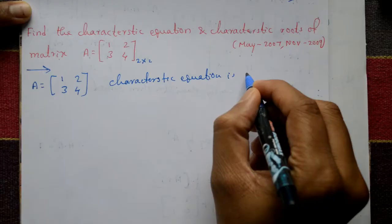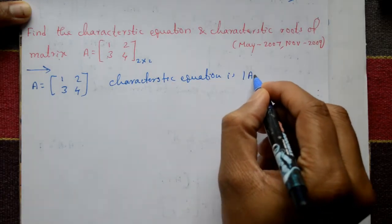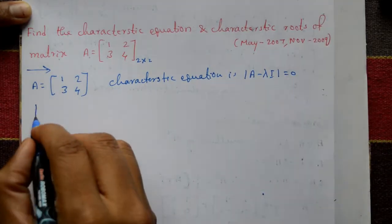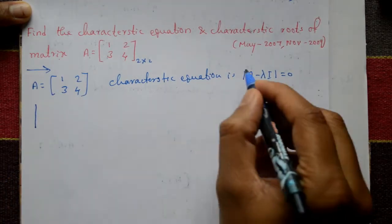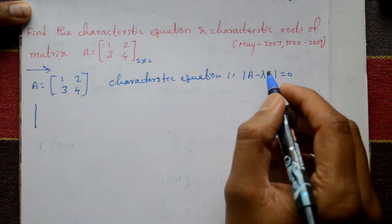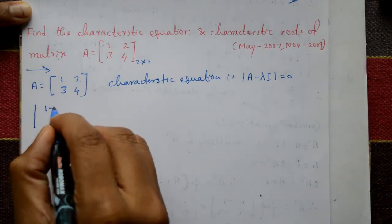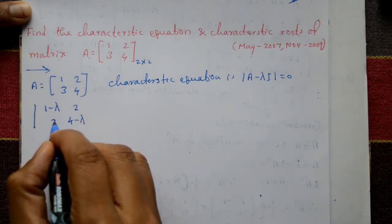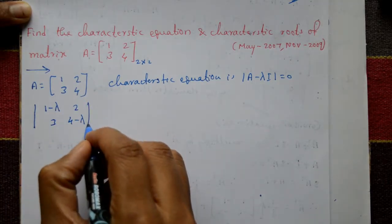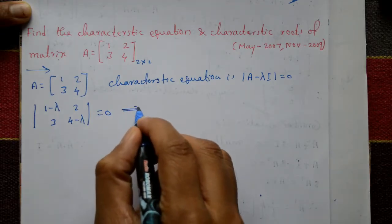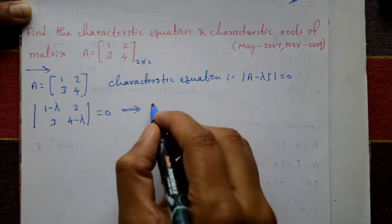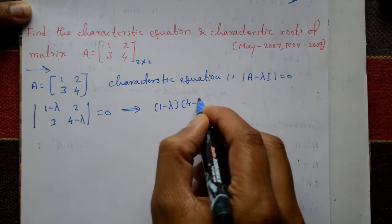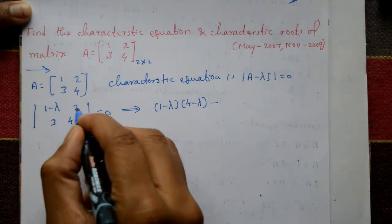The characteristic equation is the determinant of (A minus lambda I) equal to 0. Take the determinant: A means the given matrix minus lambda I. Taking diagonally, this gives (1 minus lambda) and (4 minus lambda); the rest remain the same — 2 and 3 as they are. This is equal to 0.